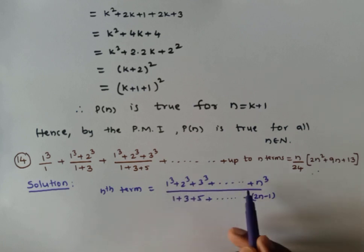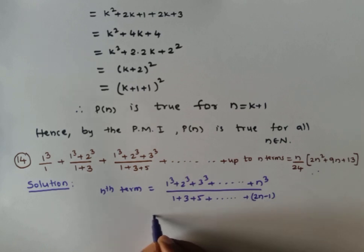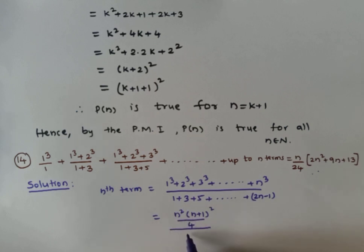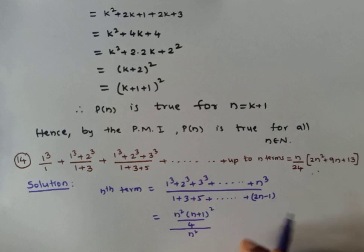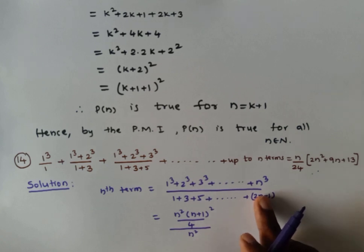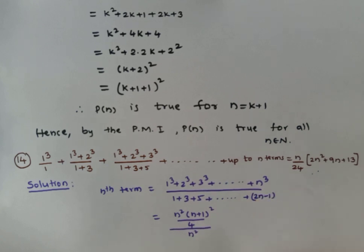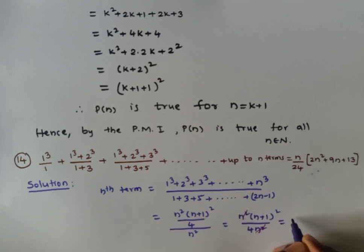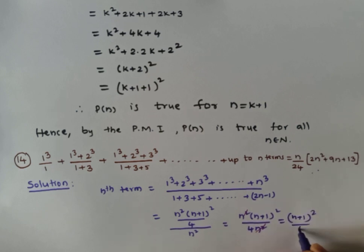We already know the sum of first n cubes is n²(n+1)²/4, and the sum of the first n odd numbers is n². So the nth term simplifies to [n²(n+1)²/4] / n² = (n+1)²/4. Therefore, the nth term of this series is (n+1)²/4.